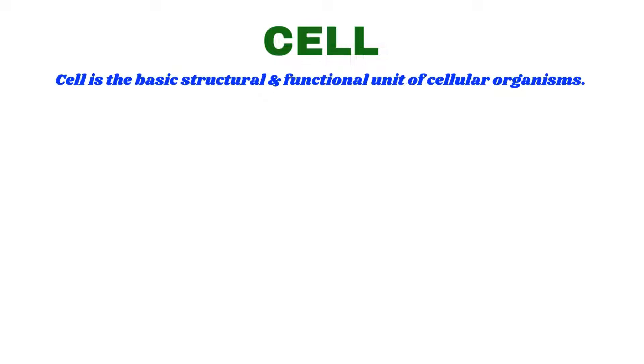The first thing that comes to mind after listening to cell is that it is the basic structural and functional unit of a cellular organism. Why do we call them the basic unit? Because a cell can make tissue, tissue can make organ, an organ can make an organ system, and that makes a whole organism. So, that's why we call a cell as the basic unit of an organism.